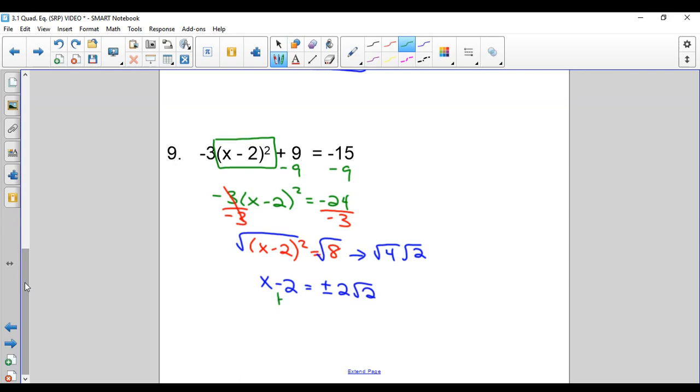We add 2 to both sides. 2 plus or minus 2 radical 2. And there's your answer. And that's the square root property.